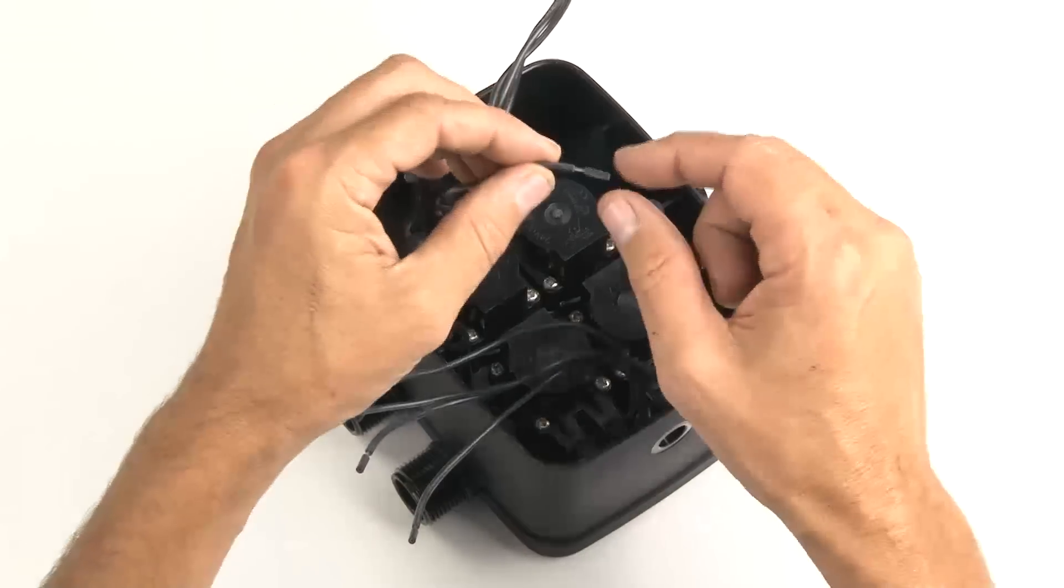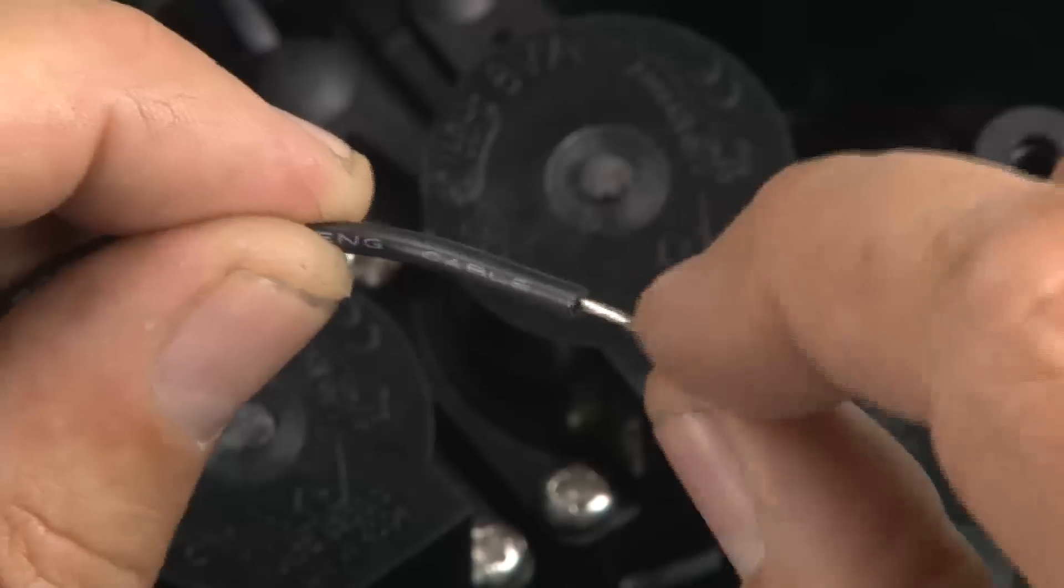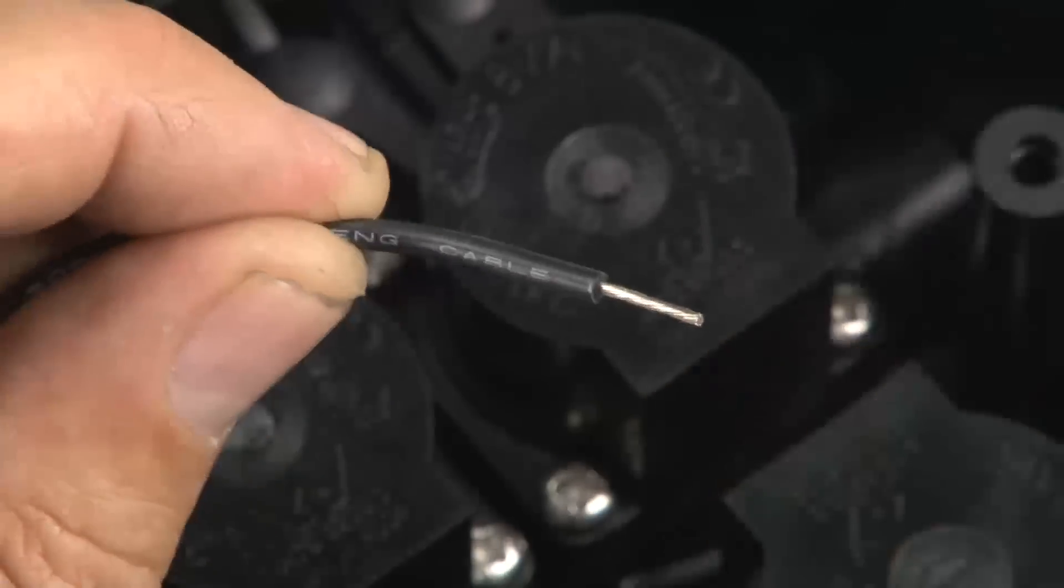You'll notice that the ends of the wires have the insulation pre-cut for your convenience. Gently remove all of these ends with a twisting motion and dispose of them.